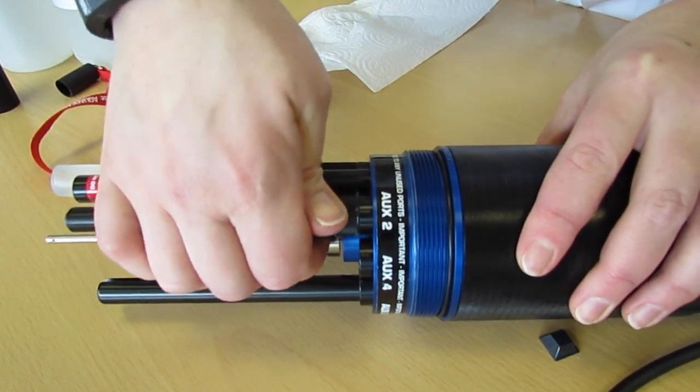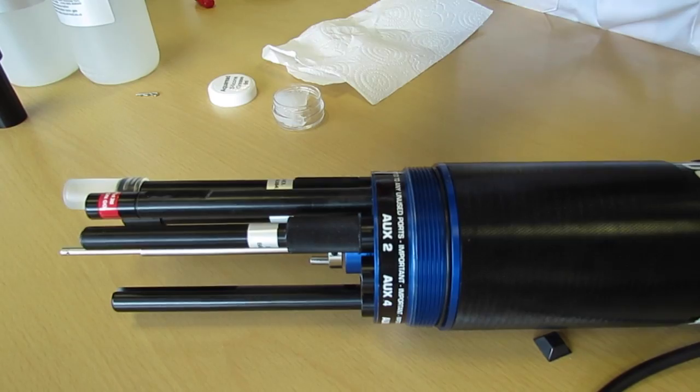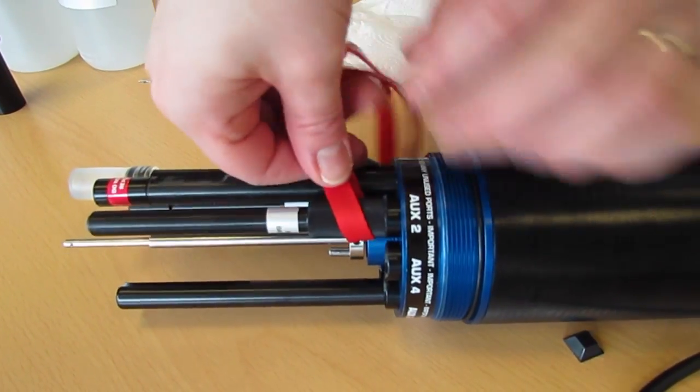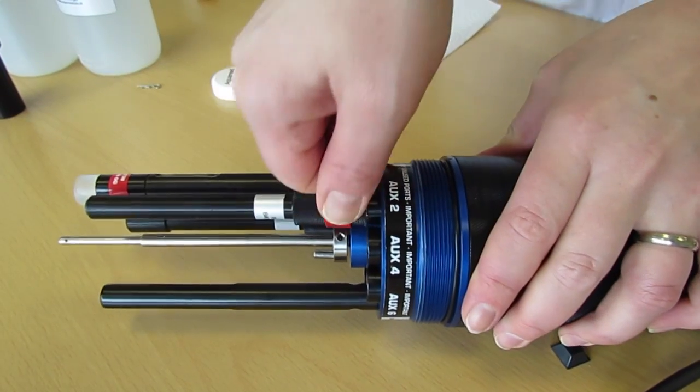This needs to be screwed down as tight as possible by hand. Take the red lanyard, put it over the electrode, and tighten up as much as possible.